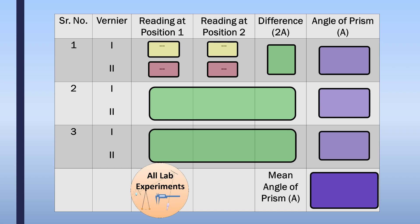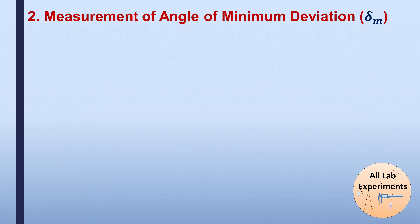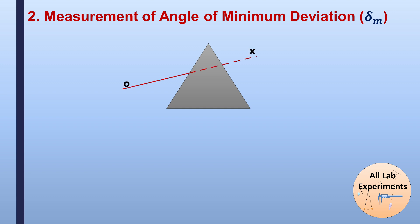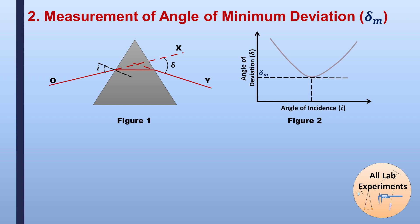Now we move to measuring the angle of minimum deviation. If light coming from O travels in a straight line it should reach X, but the prism deviates it to point Y. When we plot a curve between angle of incidence and angle of deviation, we find that as the angle of incidence increases, the angle of deviation first decreases and then increases — the minimum point is the angle of minimum deviation.